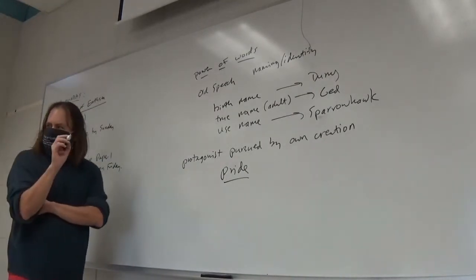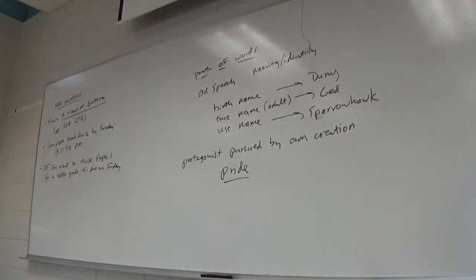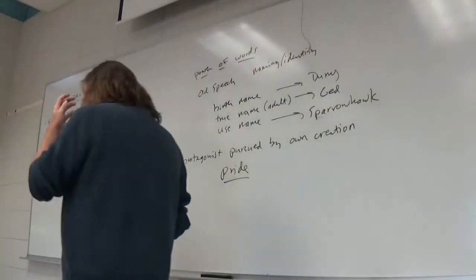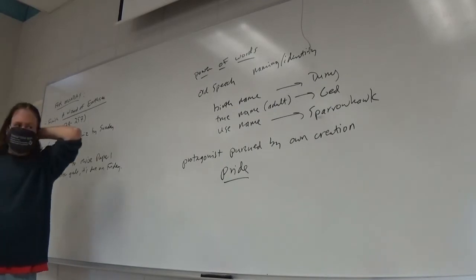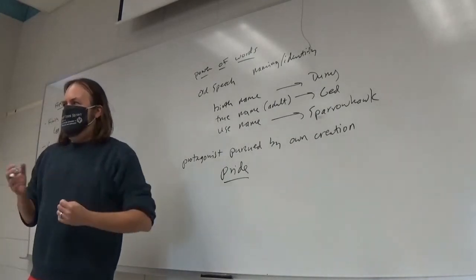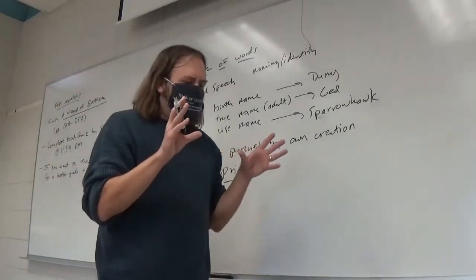Particularly early on, yeah, like, after the shadow attacks him, he seems to be changed. Right? Once things are no longer so easy for him because he develops a stutter and his hands don't work quite as deftly as they used to, right, his magical learning slows down a little bit, right? And he has to catch up to people who used to be behind him. So that seems to do a little bit to his pride and arrogance, right?